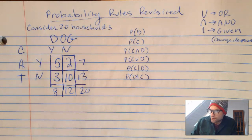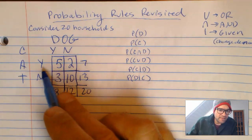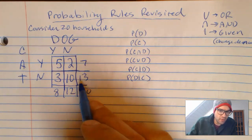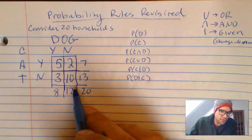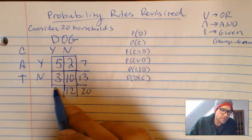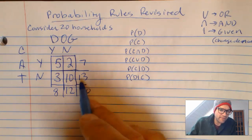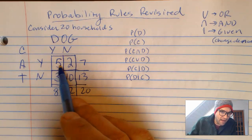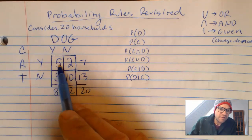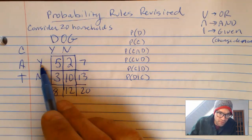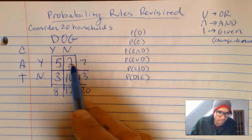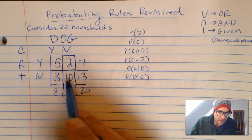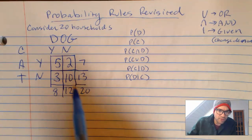What this means: out of the 20 households, 7 have a cat, 13 don't have a cat. Out of the 20 households, 12 don't have a dog, 8 do have a dog. Inside the table, there are 5 that have both a dog and a cat, 2 that have a cat but no dog, 3 that have a dog but no cat, and 10 that have neither.